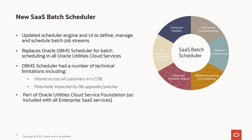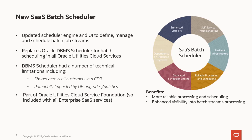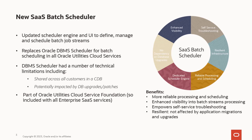SaaS batch scheduler is a feature in Oracle Utilities Cloud Service Foundation that provides a SaaS batch scheduler engine and user interface to define, manage, and schedule batch streams to run at periodic intervals. The key features include reliable processing and scheduling, enhanced visibility into batch stream processing, empowering customers to perform self-service troubleshooting, resilient infrastructure not affected by application migration and upgrades, a dedicated scheduler engine for each customer, and no dependency on database upgrades.